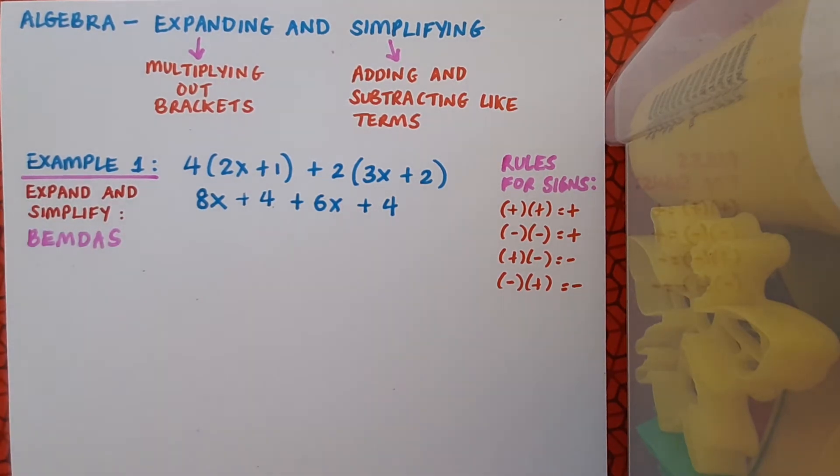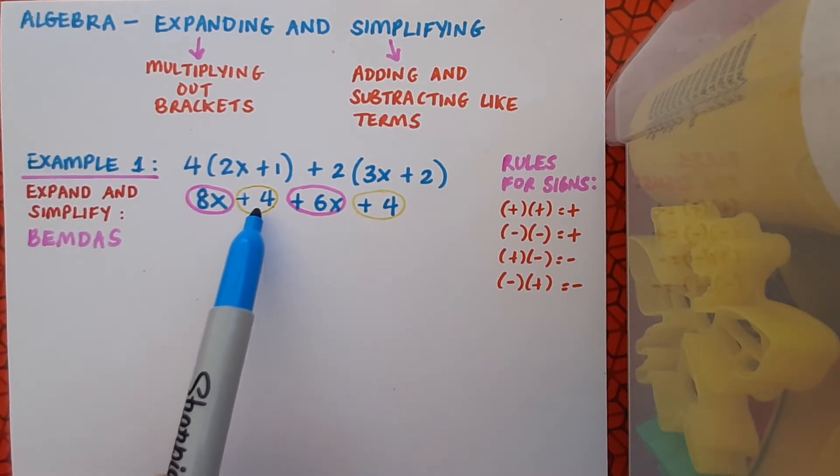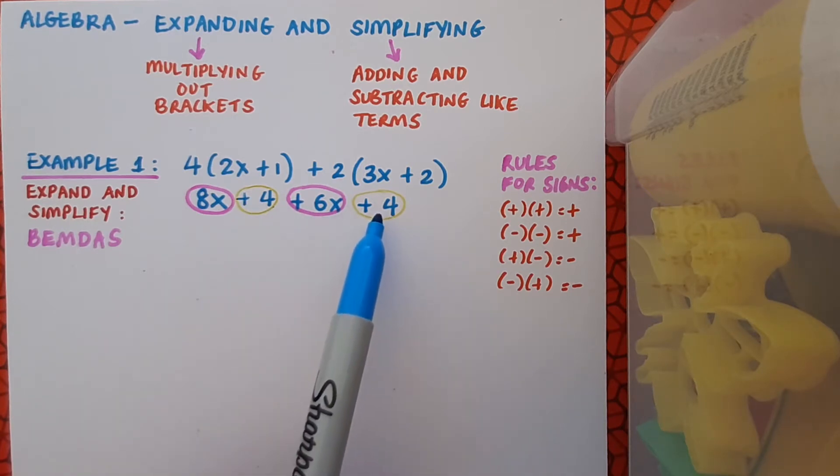We've followed the expand part of the instruction, and now we have to simplify. Simplifying just means looking out for like terms. So can you spot them in this example? We have 8x and 6x are like terms, and 4 and 4 are also like terms. Just take a pause for a moment and see, can we remember our vocabulary? What do I call these numbers that have no variables attached? These are called constants.